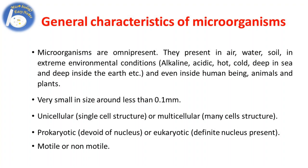The next characteristic is they are very small in size, around less than 0.1 mm. They are unicellular or multicellular. Unicellular means single cell structure. When you study them under the microscope you will find there is only one cell, then you can call it a unicellular microbe. Multicellular means many cell structure.